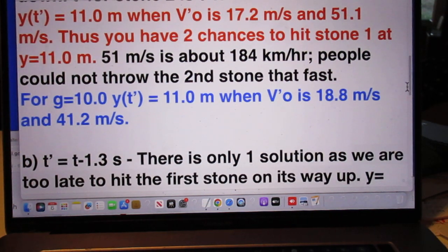So y of t prime is also at 11.0 meters when v prime zero is 17.2 meters per second, but also at 51.1 meters per second. In other words, you have two chances to hit stone 1 at location y is 11.0 meters.